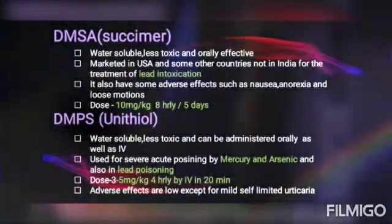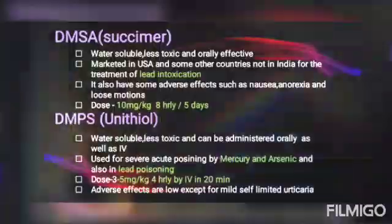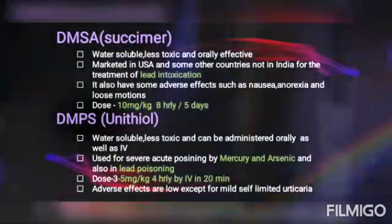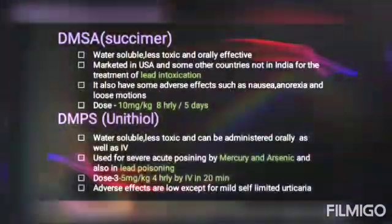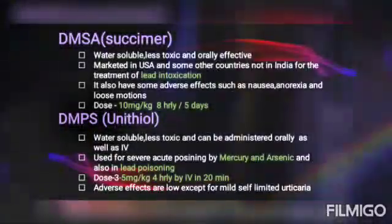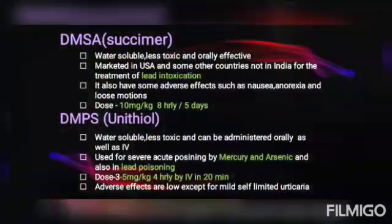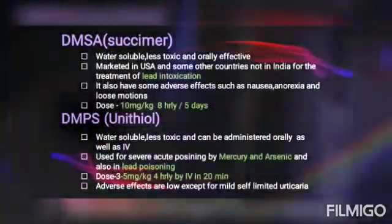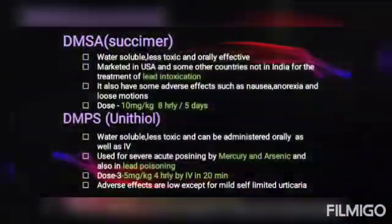The next drug is DMPS — dimercapto-1-propane sulfonic acid. It is water-soluble, less toxic, and can be administered orally as well as intravenously. It is used for severe acute poisoning by mercury and arsenic, and also in lead poisoning. The dosage is 3-5 mg/kg every 4 hours IV over 20 minutes. Adverse effects are low except for mild self-remitting urticaria. It is also a dimercaprol analogue.